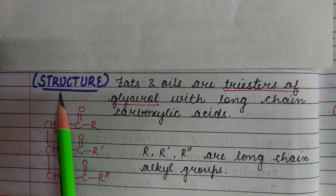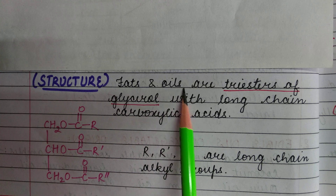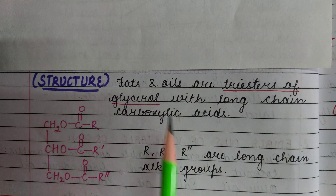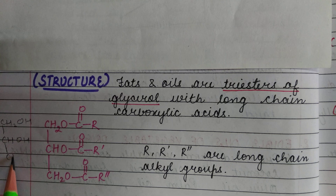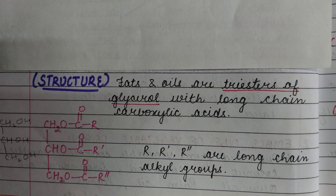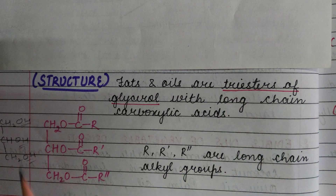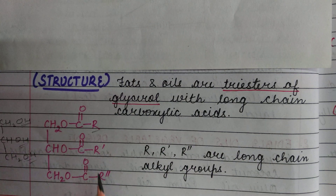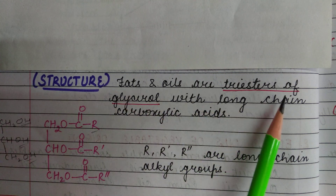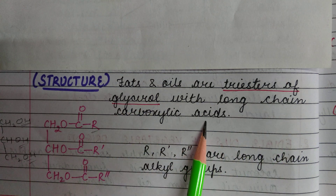Now we have the structure of fats and oils. Fats and oils are triesters of glycerol. Glycerol is CH2OH, CHOH, CH2OH. When these hydroxyl groups are replaced by ester groups, we get triesters. So fats and oils are triesters of glycerol with long-chain carboxylic acids, meaning the alkyl groups are long-chain alkyl groups.